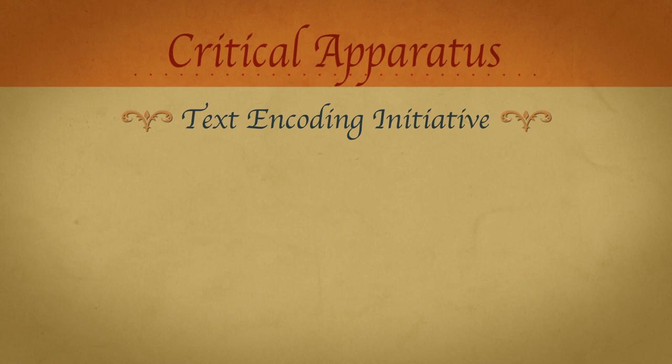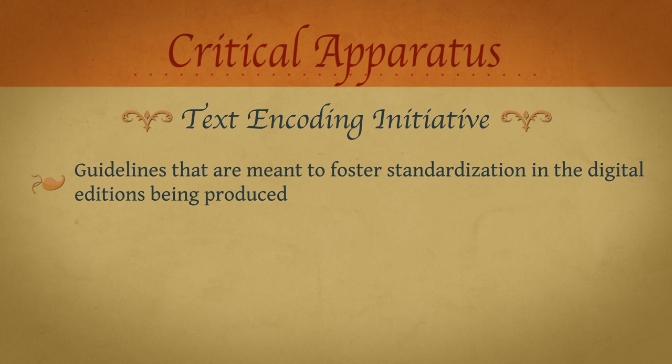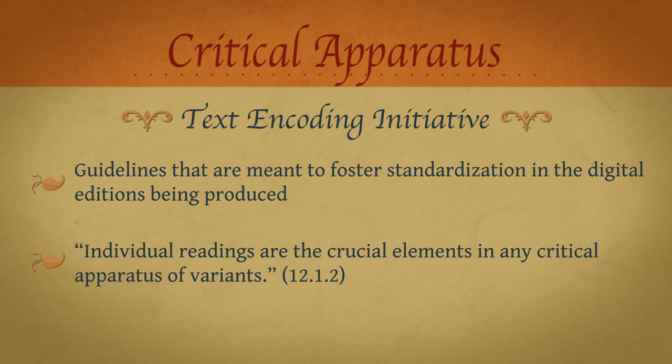This trivialization is explicit in the Text and Coding Initiative guidelines, guidelines that are meant to foster standardization in the digital editions being produced at present. The TEI guidelines define the apparatus as a repository of variants and assert that individual readings are the crucial elements in any critical apparatus of variants. For classical texts, at least, a proper critical apparatus is far more than a repository of textual variants.